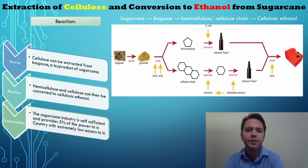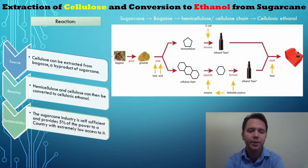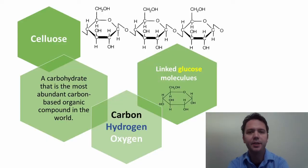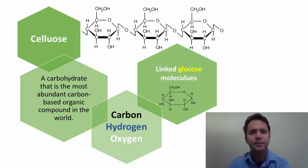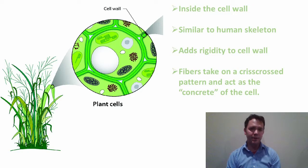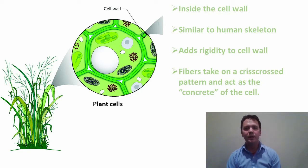Sugarcane is a major crop in Burundi, and I'm going to talk about how cellulose can be extracted from one of its byproducts, bagasse, and converted into ethanol. Cellulose is a carbohydrate and the most abundant carbon-based organic molecule in the world. It is made up of linked glucose molecules consisting of hydrogen, carbon, and oxygen. Cellulose is found inside the cell wall and performs a function similar to that of the human skeleton. It adds rigidity to the cell wall, and its fibers take on a crisscross shape, much like the bars found in concrete.